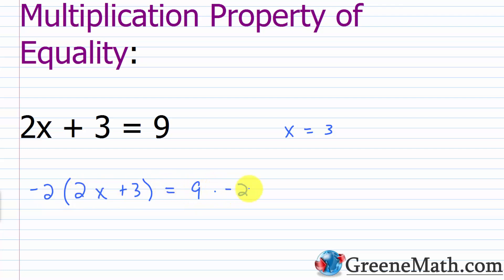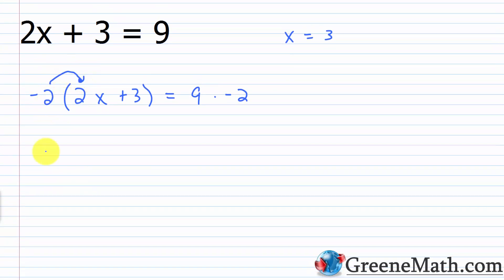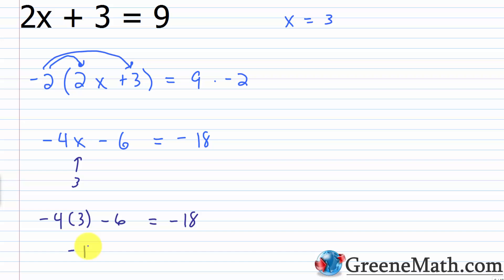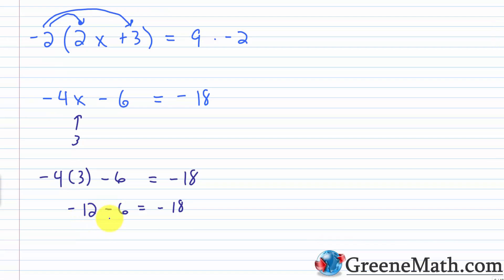Multiplying negative 2 by 2X plus 3 on the left and negative 2 by 9 on the right, using the distributive property: negative 2 times 2X is negative 4X, and negative 2 times 3 is minus 6. This equals 9 times negative 2, which is negative 18. Now if I plug in 3 for X: negative 4 times 3 minus 6 equals negative 18 gives negative 12 minus 6 equals negative 18, which is negative 18 equals negative 18. So multiplying both sides by the same non-zero value kept the solution as X equals 3.